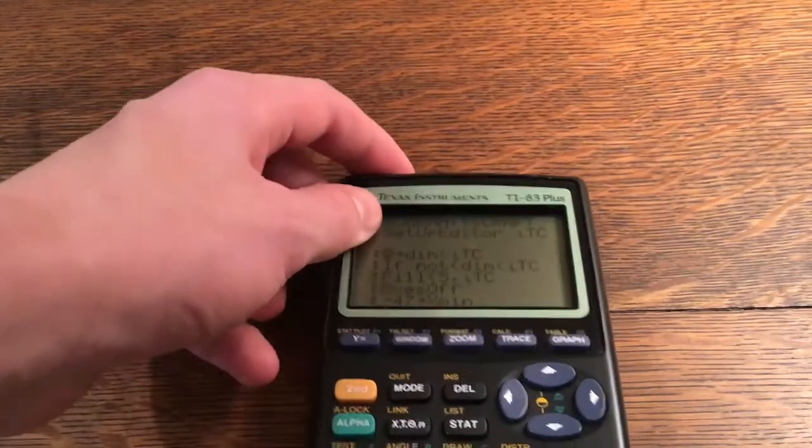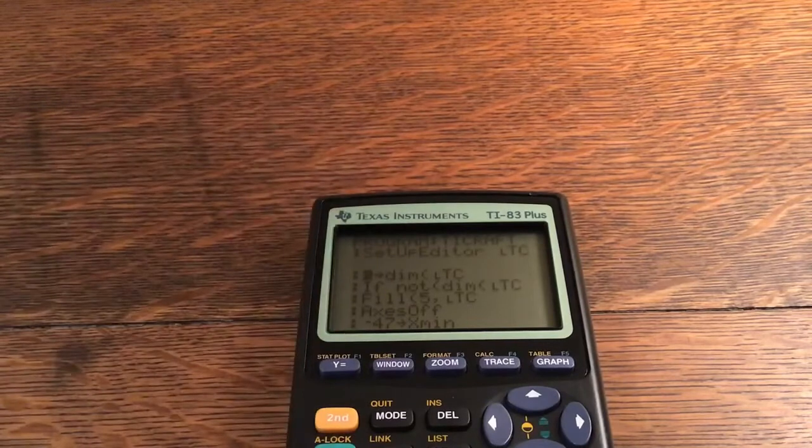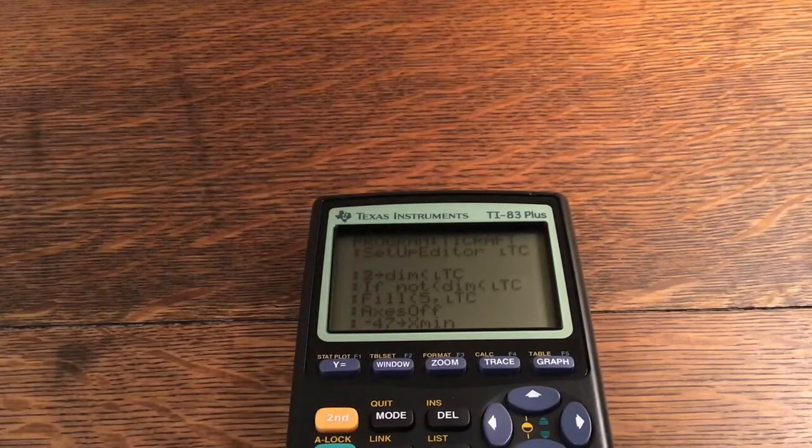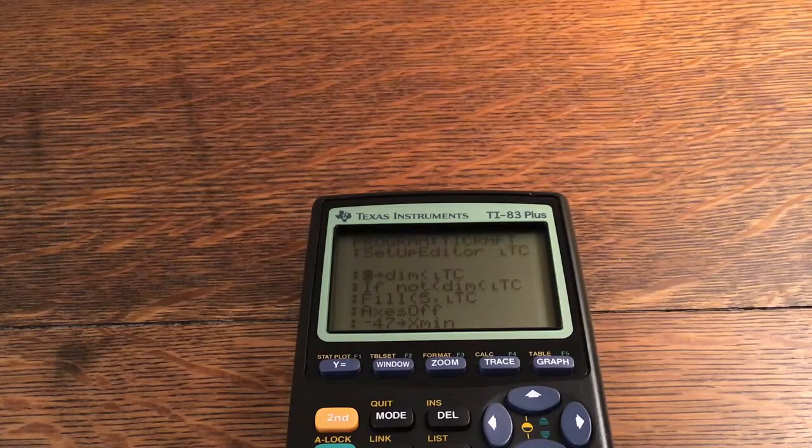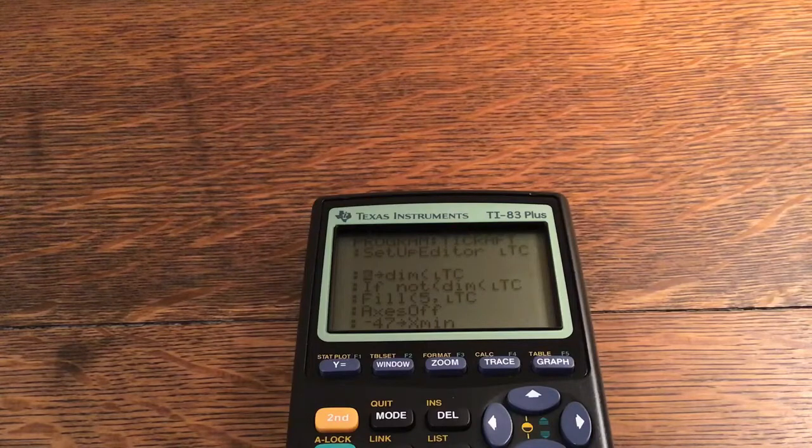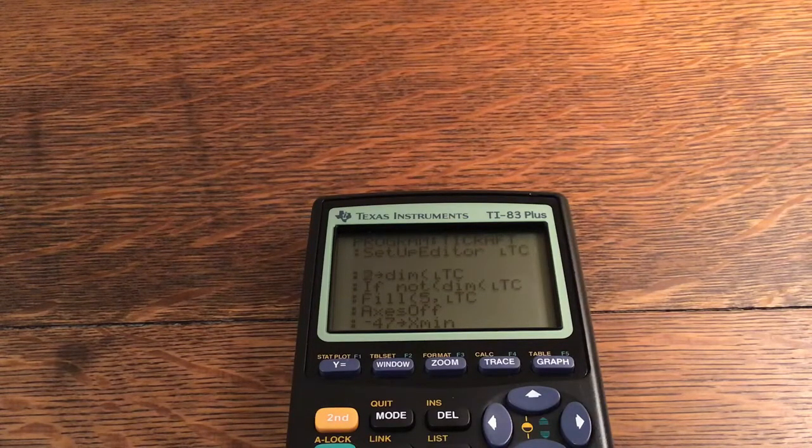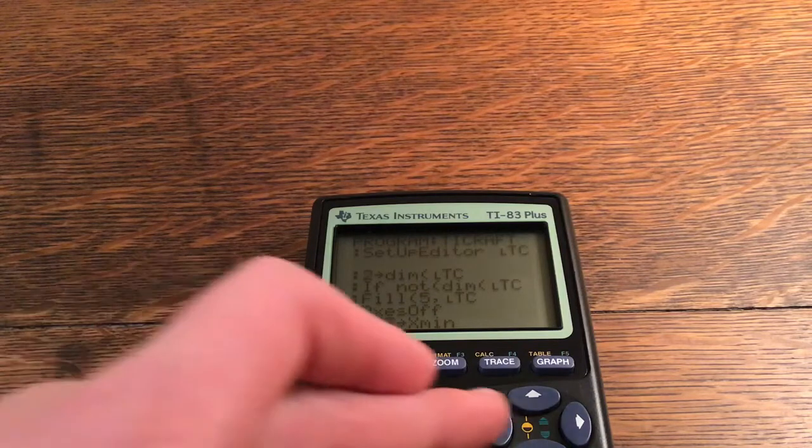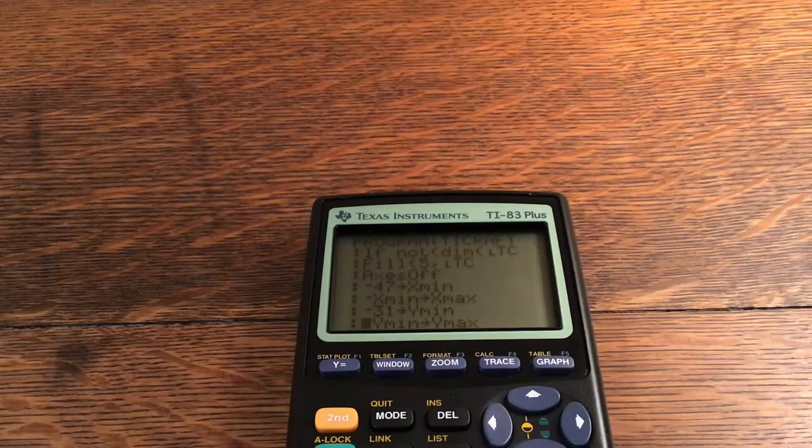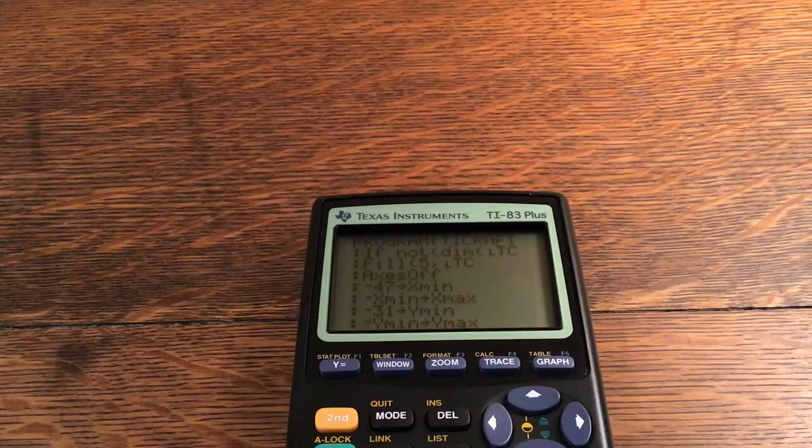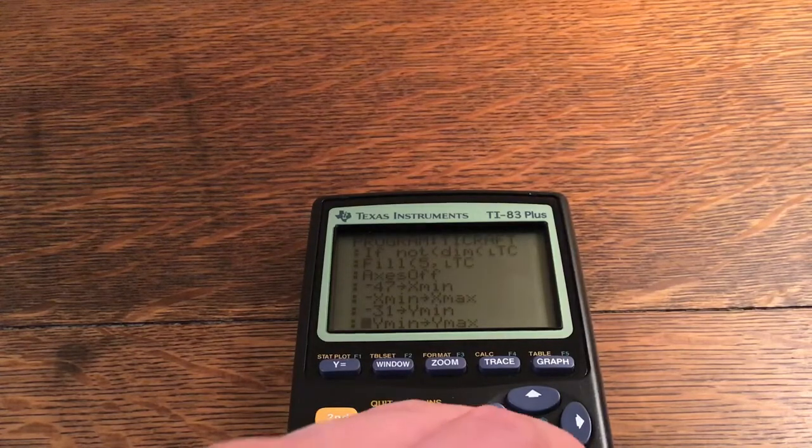2 store under the dimensions of LTC. If not dimensions of LTC fill 5 into the LTC. If you weren't in the spot then it'll put you at 5 comma 5. This keeps where you were on the screen, that's what the list does.